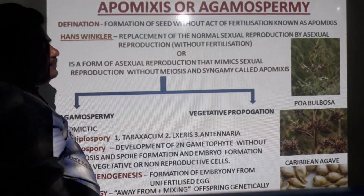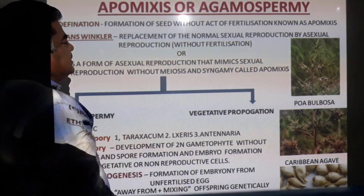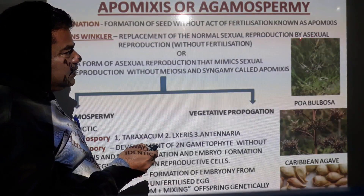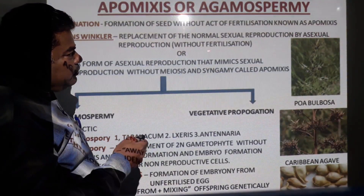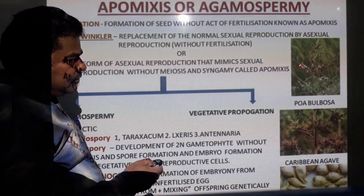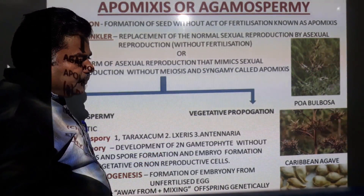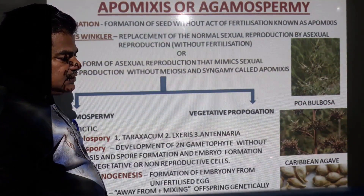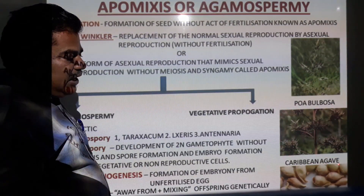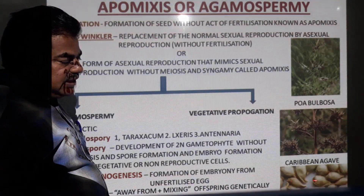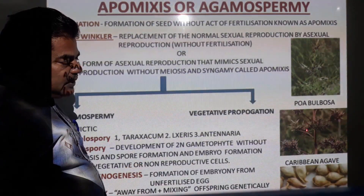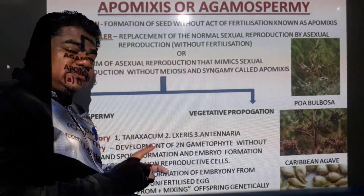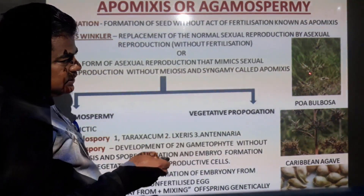Hans Winkler defined Apomyxis as replacement of normal sexual reproduction by asexual reproduction. Examples include Poa bulbosa, Caribbean Agave, and Citrus. Seed formation takes place asexually — fertilization does not take place. It is also defined as a form of asexual reproduction that mimics sexual reproduction, producing seeds without meiosis and syngamy.